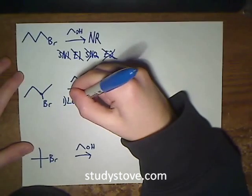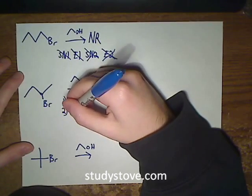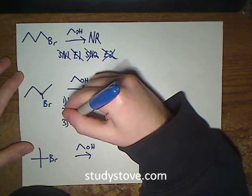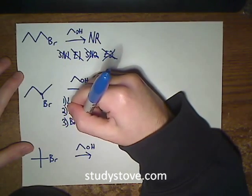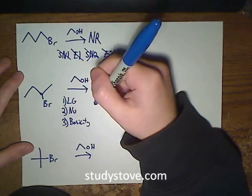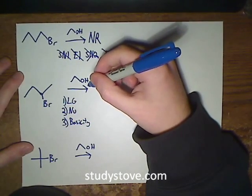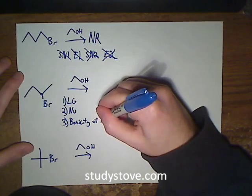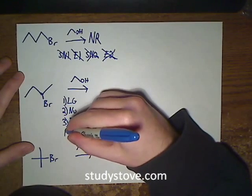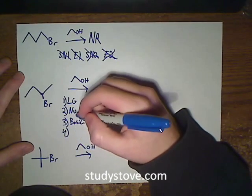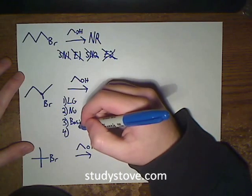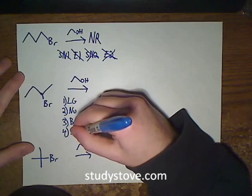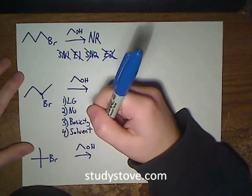So I'll just list them. You need to look at the leaving group. You need to look at the nucleophile, see how strong of a nucleophile it is. You have to look at the basicity of the nucleophile, because often you have a good nucleophile, but it's also so basic that you're more likely to end up with an E2 reaction. And you also have to look at the solvent, because often the nucleophile is kind of the borderline case, and whether the solvent is protic or aprotic will lead it toward SN1 or E1.